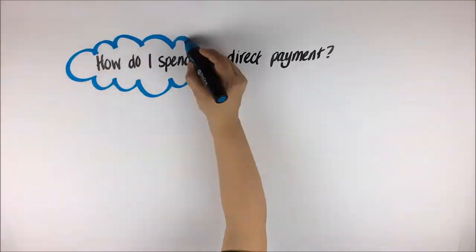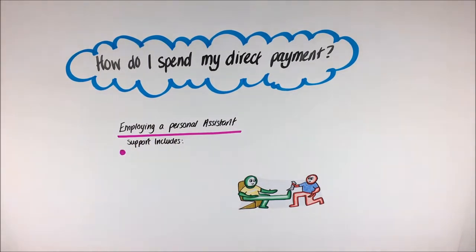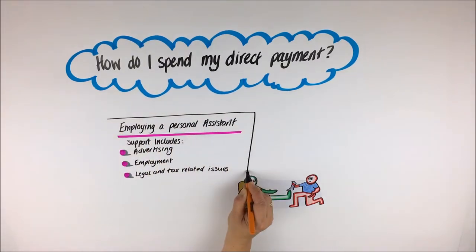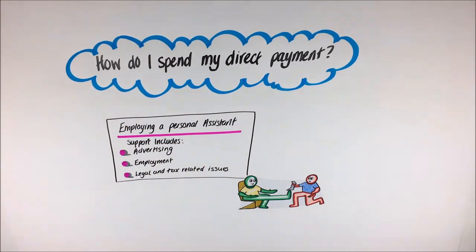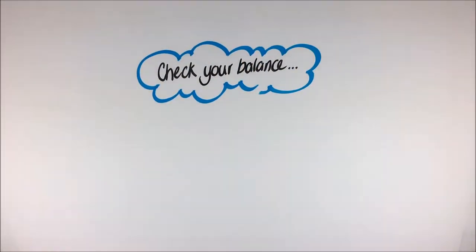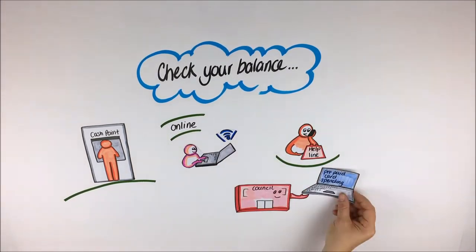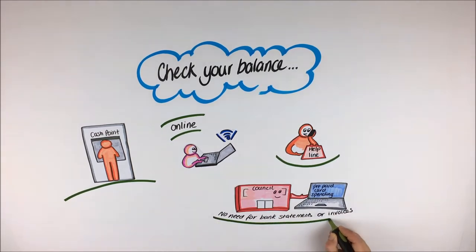How do I spend my direct payment? Employing a personal assistant. If you employ a personal assistant, you can get help with advertising for and employing someone, as well as help with your legal or tax-related issues. Using your prepaid card, you will be able to transfer money to pay your personal assistant and to make tax and national insurance contributions. You can check your balance on your prepaid card at a cash point, online, or by phoning the helpline. The council will also be able to see your prepaid card account, so you don't need to keep bank statements or invoices.